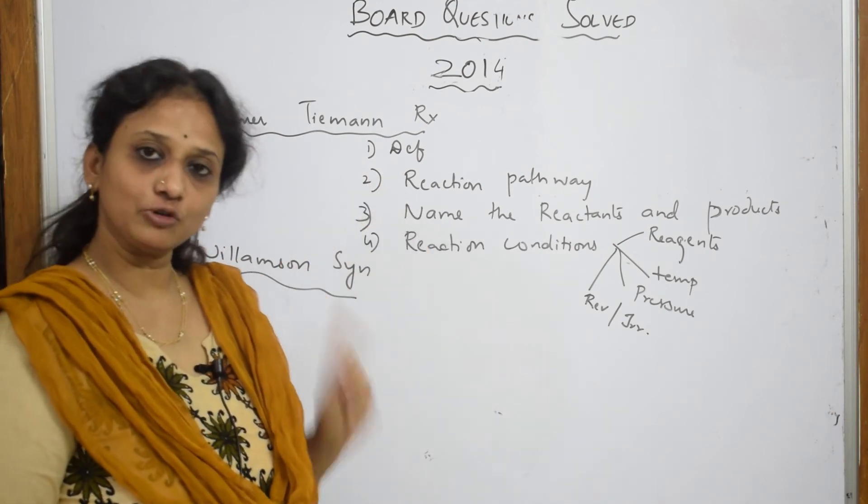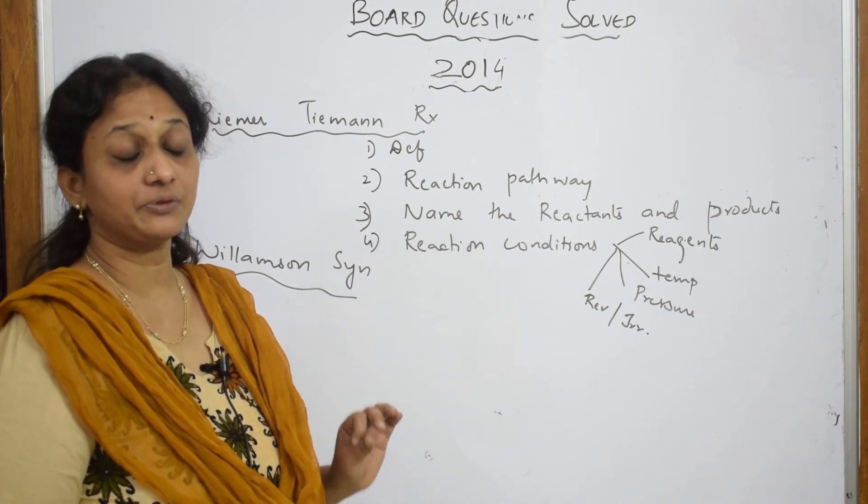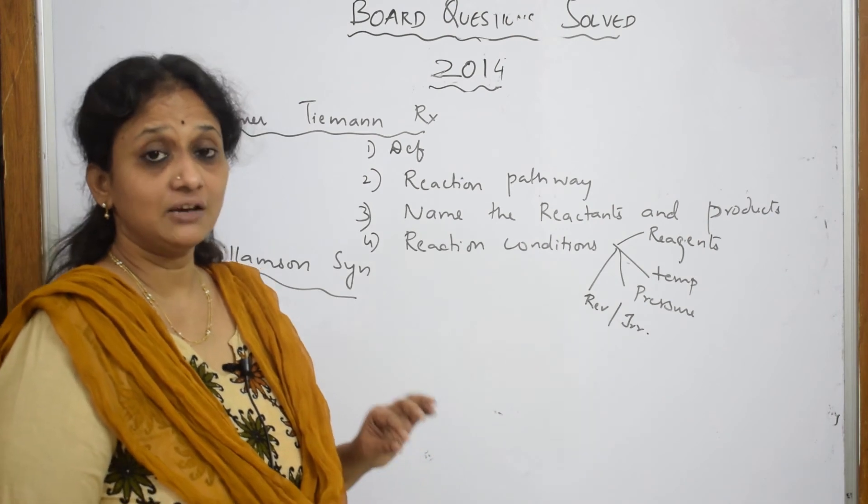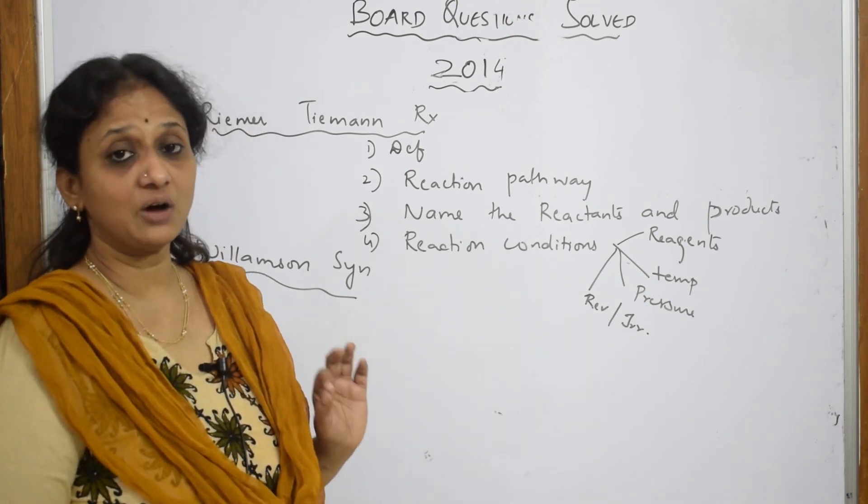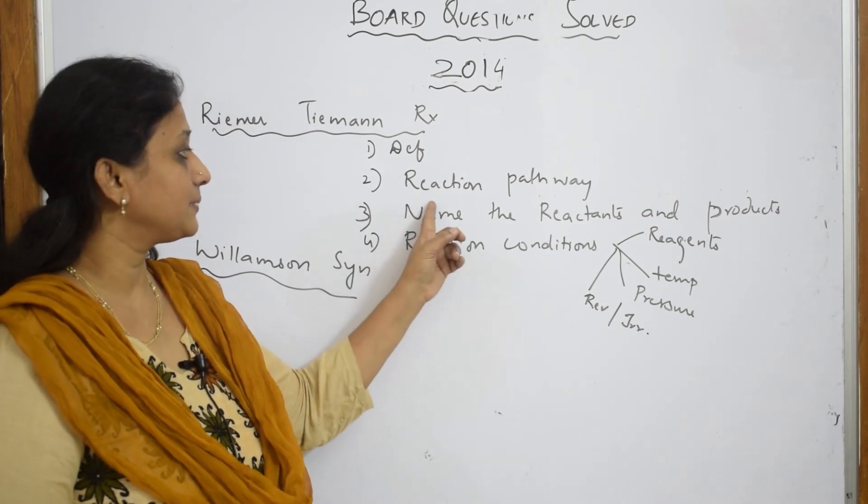Reaction pathway - I have already given the mechanism for Riemann-Thiemann reaction. I have shown you clearly step by step from where is the electrophile generated, where is it attacking, how are we finally acidifying it.